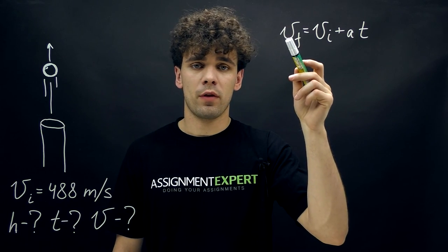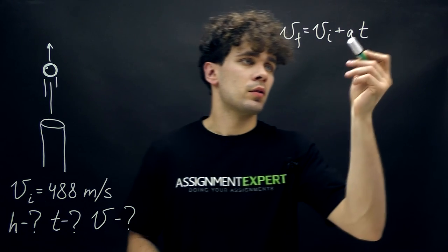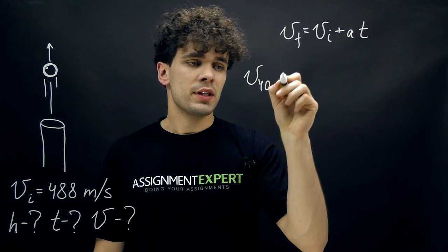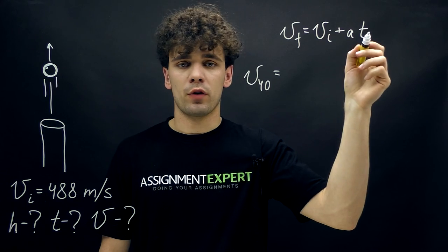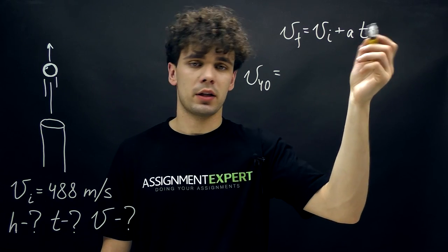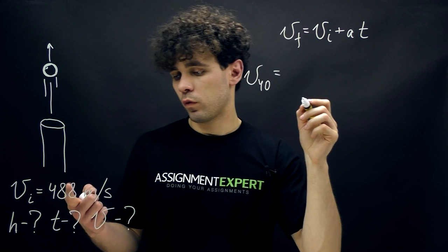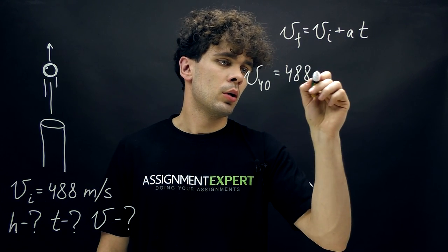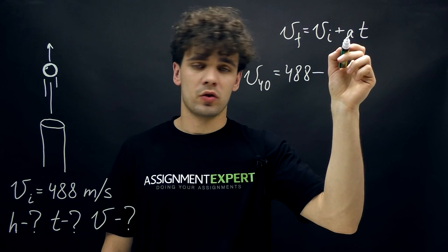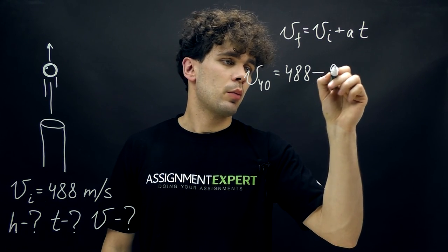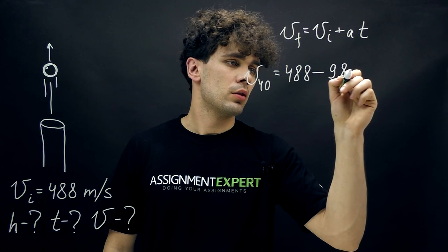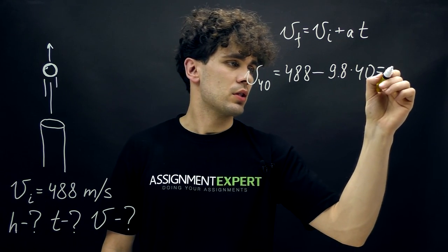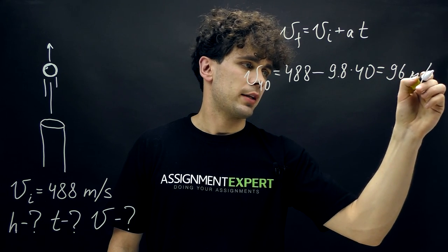So we're searching for the final speed. And when we're searching the speed for 40 seconds we will insert 40 over here, and for 60 we'll obviously get 60 over here. So this is equal to 488 minus, because the acceleration is directed downwards, 9.8 times 40. And this gives us 96 meters per second.